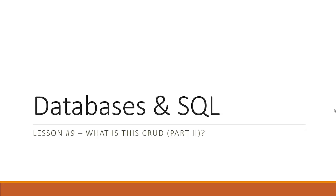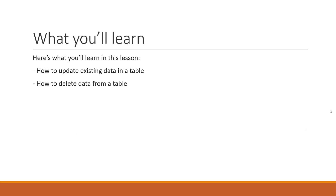This is lesson number nine of our databases and SQL video tutorial series. Today's lesson is going to be about the second half of the CRUD talk. In lesson number eight we learned about the C and the R — the create and reading of data — and today we cover the U and the D: updating and deleting data. Whenever we deal with CRUD operations we always specify a table for these operations.